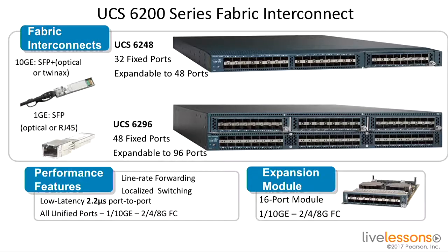As we talked about in the previous lesson, the Fabric Interconnect is actually the heart of the UCS system. The Fabric Interconnect handles all the data traffic, all the storage traffic, and then runs the management inside my architecture. The Fabric Interconnect determines how many chassis I can support underneath the architecture, because we connect the chassis up to the ports on the Fabric Interconnect.